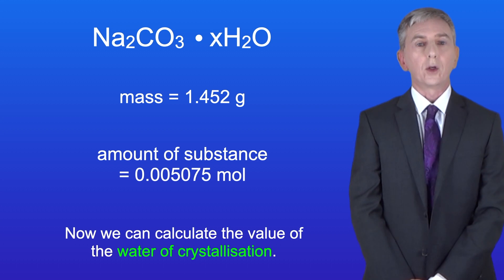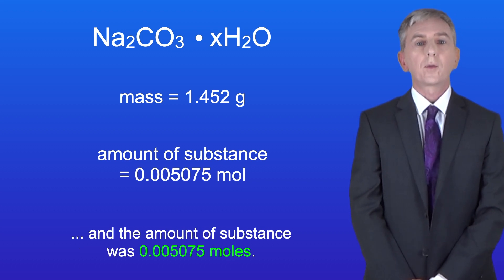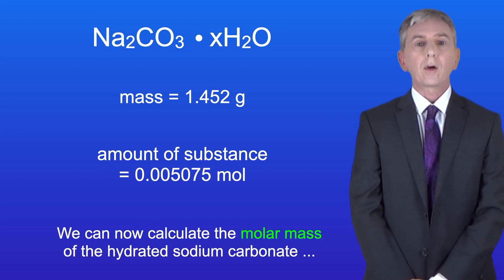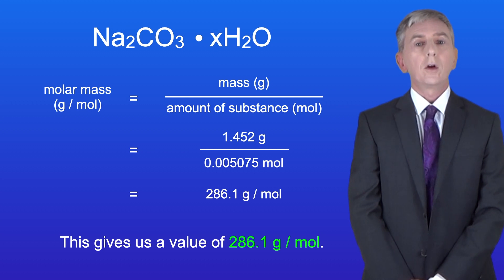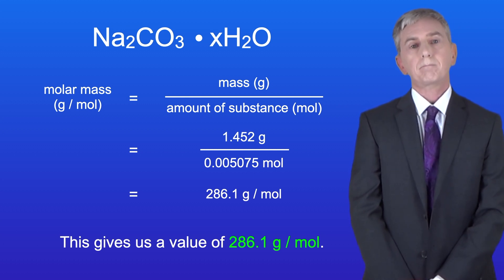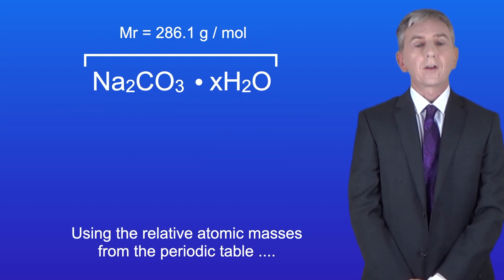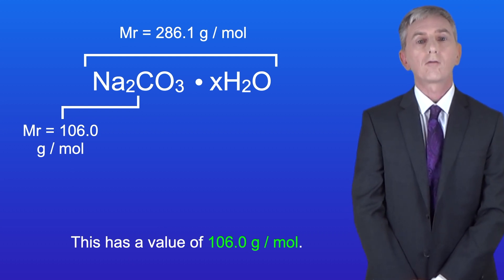Now we can calculate the value of the water of crystallization. Our mass of hydrated sodium carbonate was 1.452 grams and the amount of substance was 0.005075 moles. We calculate the molar mass of the hydrated sodium carbonate by dividing mass by moles, giving 286.1 g/mol. Using relative atomic masses from the periodic table, the molar mass of anhydrous sodium carbonate is 106.0 g/mol.